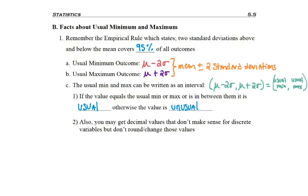Otherwise we refer to the value as unusual. We're going to use those formulas to decide whether certain values are usual or unusual. We're going to get some really weird numbers that may not make sense for whatever we're studying, especially for a discrete variable. But just like with averages, we're not going to change those values — we'll leave them because they give us more precise information.